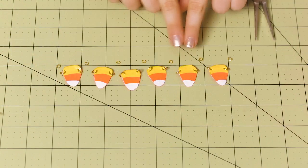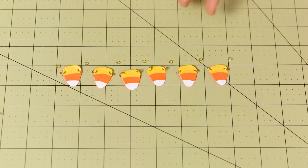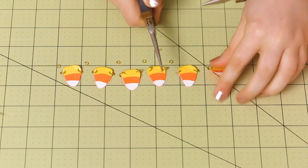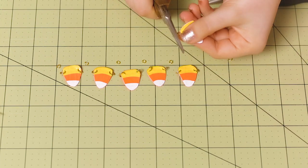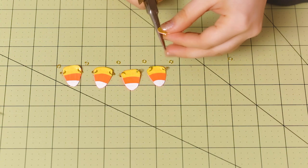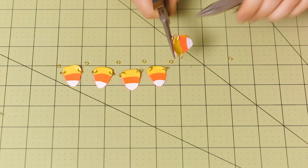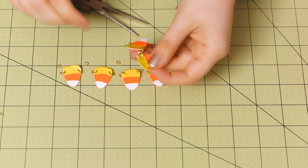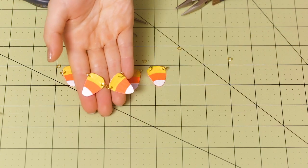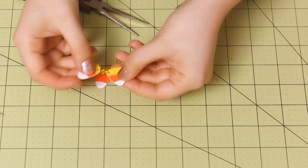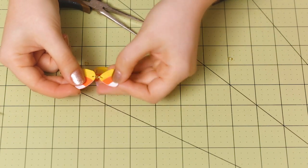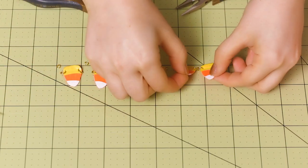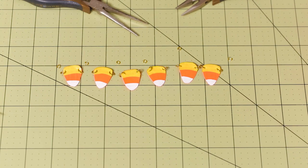So once you have all of your charms lined up next to each other, we're going to use our smaller jump rings to attach them together. So again, we're just going to open it up with our pliers and then put on one of the charms, and then the next one. And then close that up. Perfect. And now you can see that the two charms are connected together in a little chain of jump rings. So we're just going to repeat that all the way down the line.